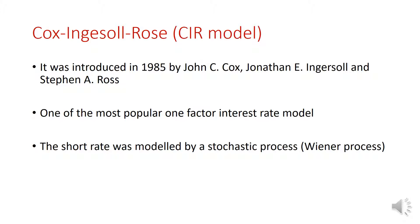The Cox-Ingersoll-Ross model, or CIR model in short, was first introduced in 1985 by three scholars. This is one of the most popular one-factor interest rate models. The key thing to remember is that the short rates are modeled by a stochastic process called the Wiener process or Brownian motion.